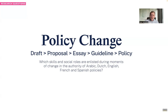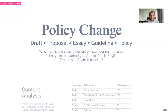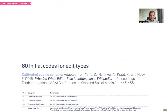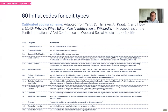We're looking very specifically at these moments and how they come into being on the Arabic, Dutch, English, French, and Spanish policies. We don't study every single policy — we do a bit of sampling — and we ended up with three policies per language, trying to choose the most representative ones to help us answer these questions. We are providing a content analysis of the edits themselves to understand what these skills and social roles are, and we came up with 60 initial codes for the edit types based on previous research and literature on the matter.